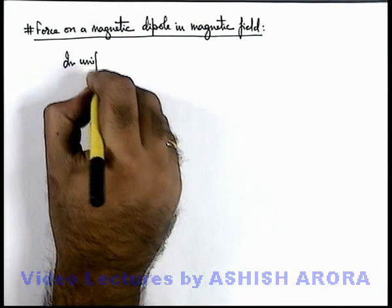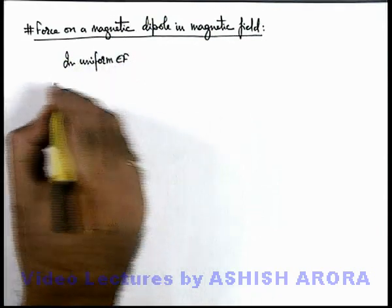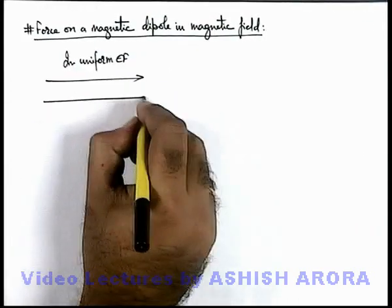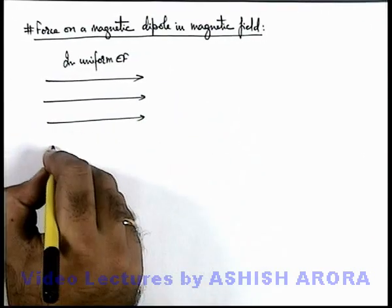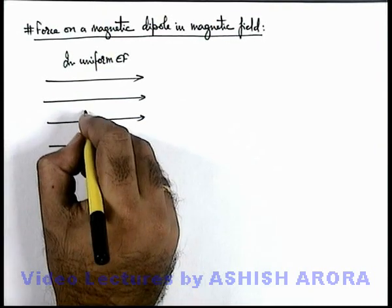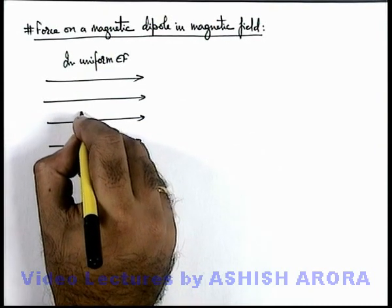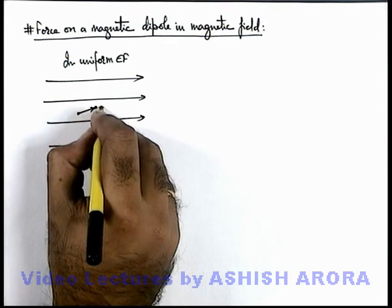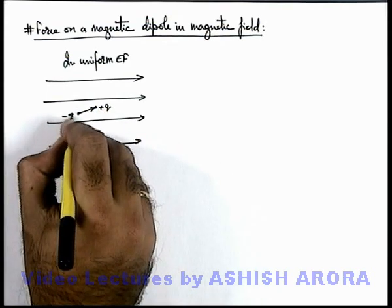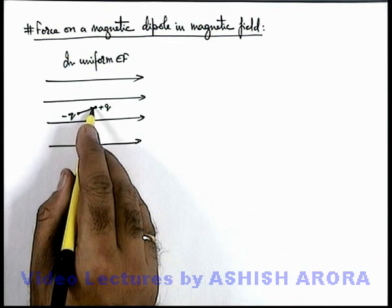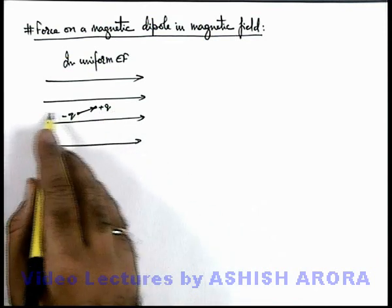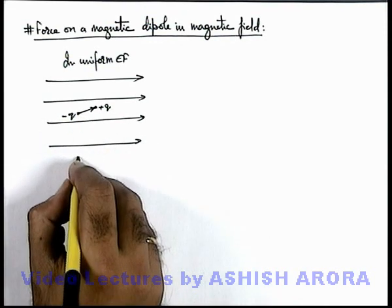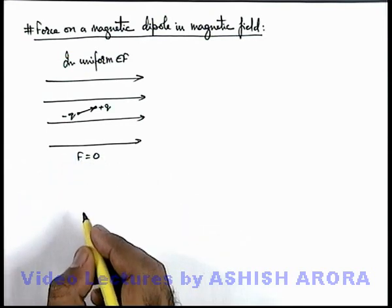in uniform electric field, when we place a dipole - if this is a uniform electric field and in it if we place a dipole where a charge is plus q and a charge is minus q - the two charges experience equal and opposite force onto it and we can see that net force on the dipole is equal to zero.